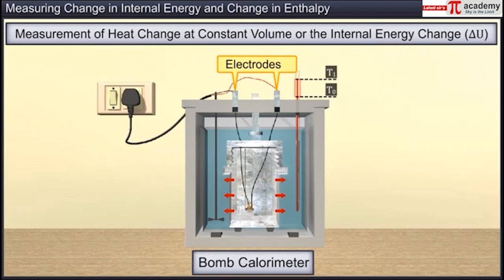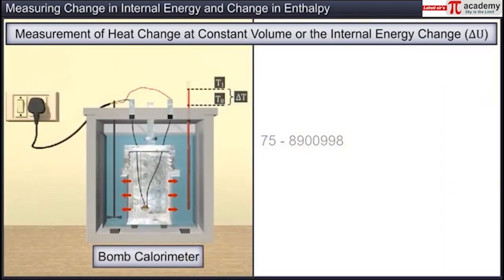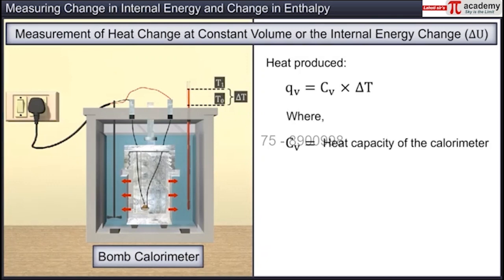The increase in temperature of water, delta T, is noted. The heat produced is calculated using the equation QV = CV × delta T, where CV is the heat capacity of the calorimeter.